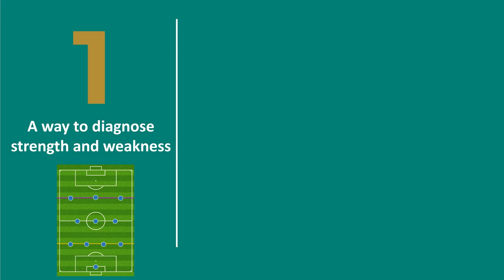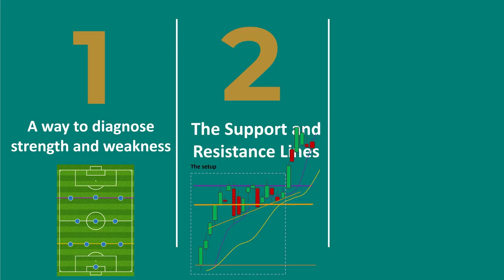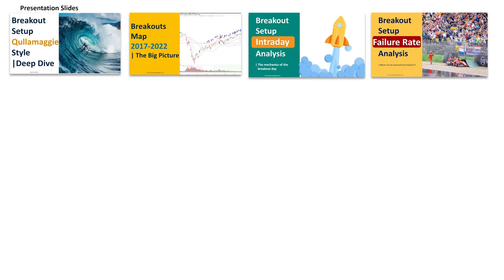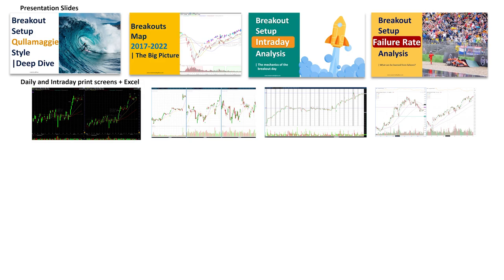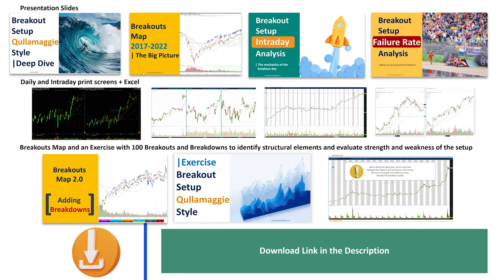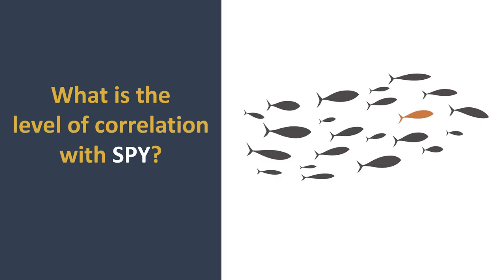A short wrap-up of key ideas covered so far: first, we looked into a way to diagnose strength and weakness through the football field model. We also covered the support and resistance lines and how important they are to the structure of the setup. We looked into the causes of failure and examples proving that good quality risk management is very important. This presentation, plus three more, along with the dataset of breakouts and breakdowns daily and intraday data, side-by-side comparison with SPY, an Excel file with measurements, the breakout map, and an exercise with 100 breakouts and 100 breakdowns with intraday data — all available for download via the link in the description.